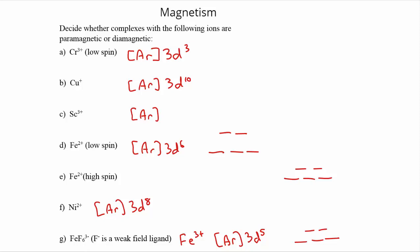Alright, the last topic in this chapter deals with some magnetic properties of transition metals. So a couple new vocab words that may have popped their heads up, they may not be new, but paramagnetic and diamagnetic.